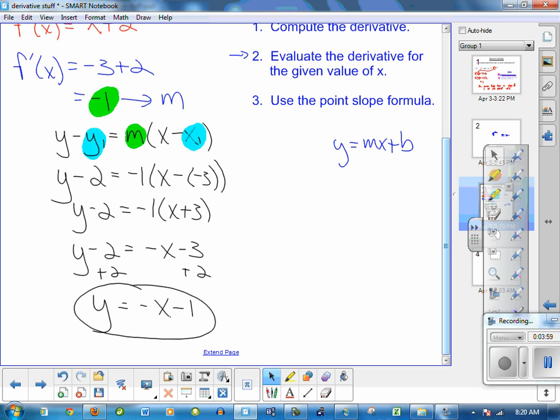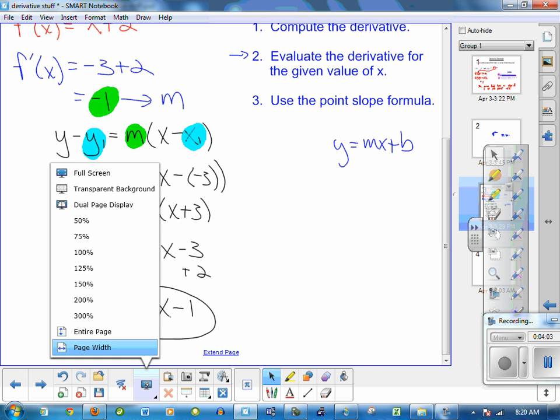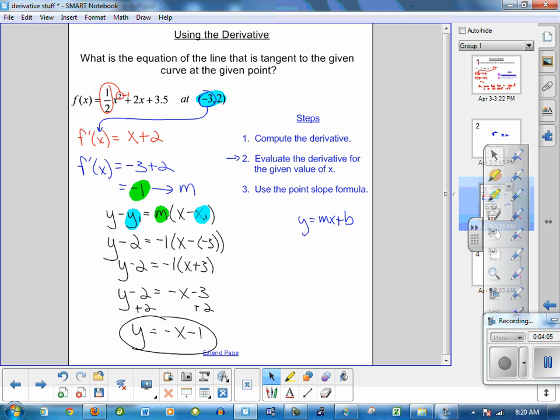This is the equation of the tangent line on this curve, f(x), at this point, (-3, 2).